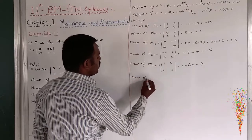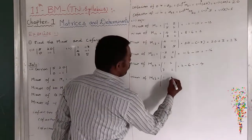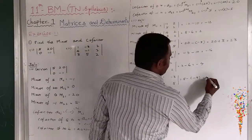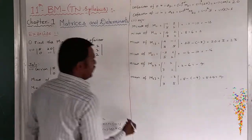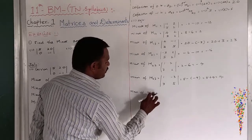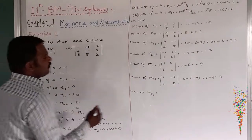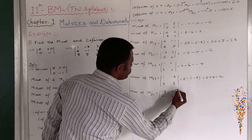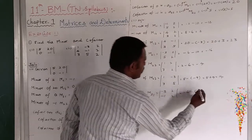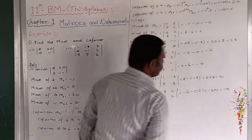Then minor M23: second row, third column. The remaining is 1, minus 3, 3, 5. So therefore: 5 minus of minus 9, which is 5 plus 9 = 14. Then minor M31: third row, first column. Remove this row and column. Remaining is minus 3, 2, minus 1, 2. Product terms: minus 3 × 2 = minus 6, minus (minus 1 × 2) = plus 2. Therefore minus 6 plus 2 = minus 4.